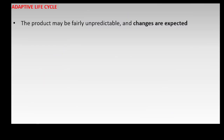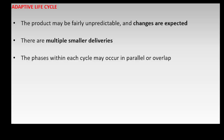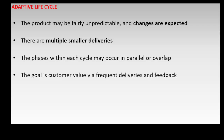In the adaptive life cycle, there is little or no upfront planning. The product may be fairly unpredictable, and changes are expected. There are multiple smaller deliveries. A project is completed in several smaller cycles, each between 1 to 4 weeks. Product increments are created and refined in each cycle and could also be deployed. The phases within each cycle may occur in parallel or overlap, and are repeated for each incremental delivery. The goal is to provide customer value via frequent deliveries and feedback. Agile approaches such as Scrum or Kanban follow the adaptive life cycle.